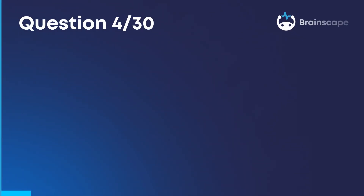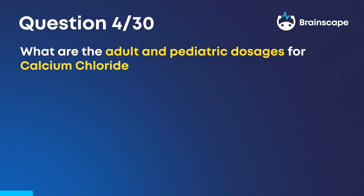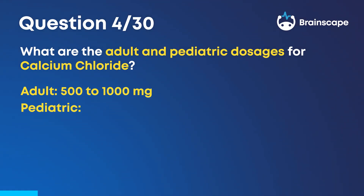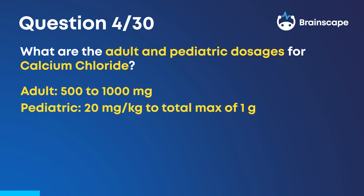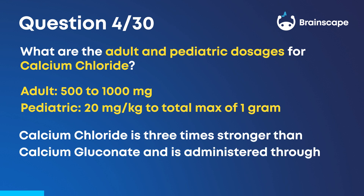Question 4. What are the adult and pediatric dosages for calcium chloride? For adults, it's 500 to 1,000 milligrams. For pediatric patients, it's 20 milligrams per kilogram to a maximum of 1 gram. Calcium chloride is three times stronger than calcium gluconate and is administered through a central, not peripheral IV.